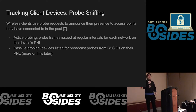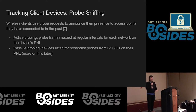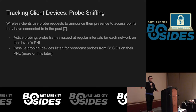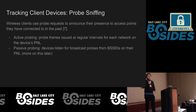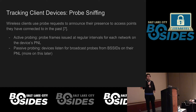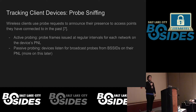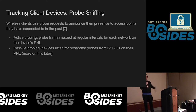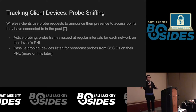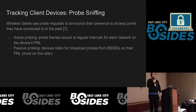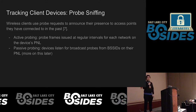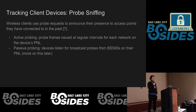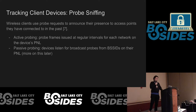Wireless devices use probe requests to announce their presence to access points. Your laptops and cell phones all have a list of preferred networks they've connected to before. As long as wireless is enabled, there's a good chance they use active probing — probe frames are issued at regular intervals for each network, essentially checking if one of those previously connected access points is nearby. If it is, the device gets a response and knows to connect. There's also passive probing, which we'll discuss more later.